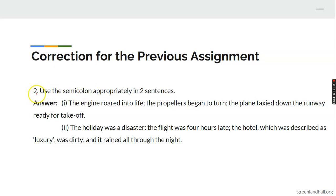The second question: use the semicolon appropriately in two sentences. Example one — 'The engine roared into life; the propellers began to turn; the plane taxied down the runway ready for takeoff.' Example two — 'The holiday was a disaster; the flight was four hours late.' You can see the semicolons used appropriately in both sentences.